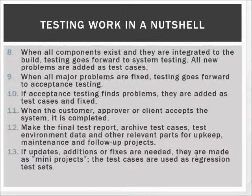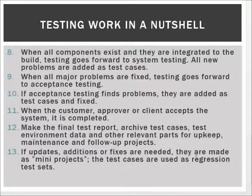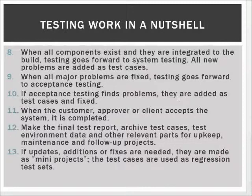After these first seven steps, we reach the point where all components are done — everything is at least at version 1.0 or release candidate 1.0. When all components are successfully integrated into the build, we move forward to system testing. Since the system is now stable enough to be tested as a whole, if we find issues during system testing we add more cases and developers and testers continue their work. When all major problems are fixed, we can proceed to acceptance testing — though this is somewhat optimistic in assuming we can find all major problems in time.